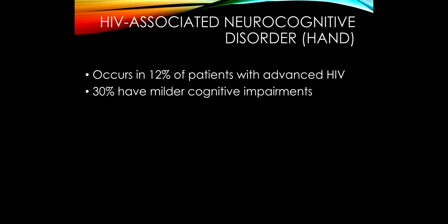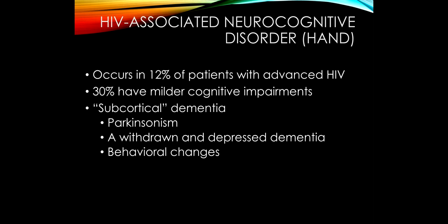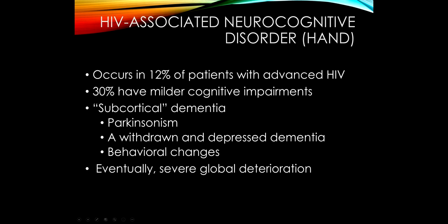HIV-associated dementia occurs in about 12% of patients as a late manifestation — the patient has AIDS. Overall, 30% of patients will have some milder cognitive impairment. When discussing subcortical dementia, think of a depressed-appearing, withdrawn patient who looks a little Parkinsonian. They may also have depression. There is no treatment for this condition, and when this diagnosis is made, the prognosis is poor and patients will decline.